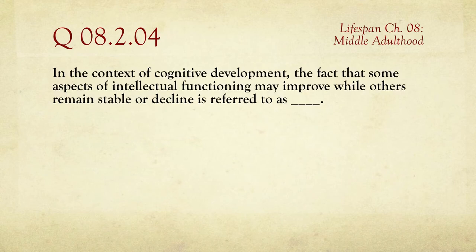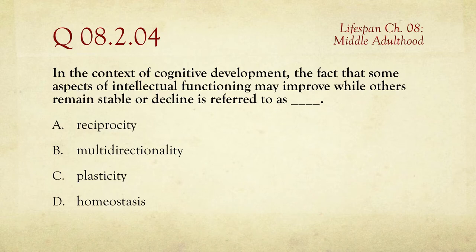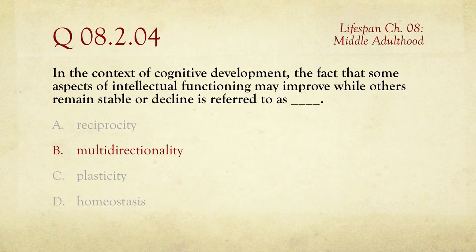Number four: in the context of cognitive development, the fact that some aspects of intellectual functioning may improve while others remain stable or decline is referred to as A) reciprocity, B) multi-directionality, C) plasticity, or D) homeostasis. When some things go up, some stay flat, and some go down, that is multi-directionality — things can go in different directions. That's the obvious one if you can break the word apart.